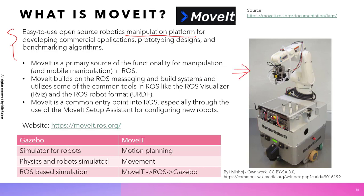This robot shown here is one example of a manipulation platform. It has two parts: the base which is on wheels — that's the platform — and then there's the robotic arm. Together, this kind of robot is called a manipulation platform, and they are used for prototyping, commercial applications, and benchmarking algorithms.